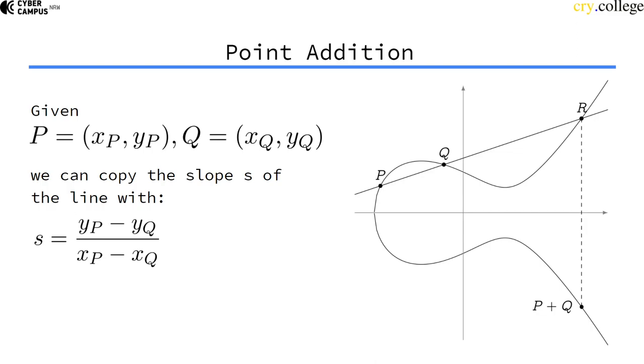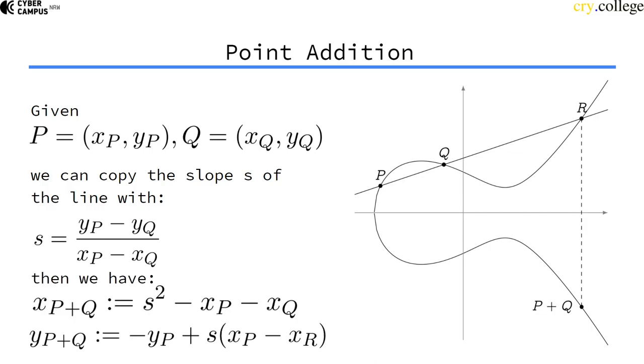We do that as we have learned in school. Here denoted by s is the slope. Then we can, using the slope, derive the addition laws for getting the x and y coordinate of this point, p plus q.